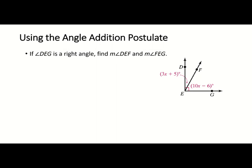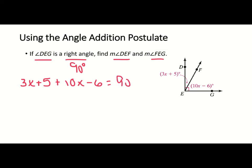Let's do one practice problem using the angle addition postulate. They tell us angle DEG is a right angle, so automatically we know that equals 90 degrees. They want us to find the measure of angle DEF and angle FEG. We know angle DEF equals 3x + 5, and angle FEG equals 10x − 6. Together they form 90 degrees, so we set them equal to 90.